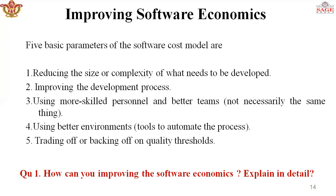Reducing software product size is the most significant way to improve affordability. The goal is to produce a product that achieves design goals with the minimum amount of human-generated source material. Reuse, object-oriented technology, automatic code generation, and high-order programming languages all focus on achieving the given system with fewer lines of human-specified source code.